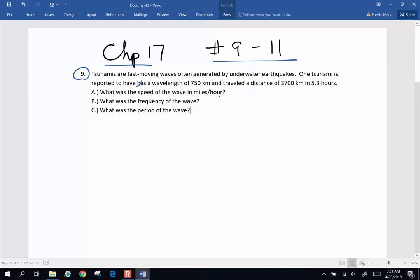This is just a speed question. Speed, as you know from early in the chapter, or early in the semester, was distance divided by time. So the distance traveled was 3,700 kilometers divided by a time of 5.3 hours. But our final answer, we're looking for this in miles per hour. So let's do a conversion. We have 3,700 kilometers.